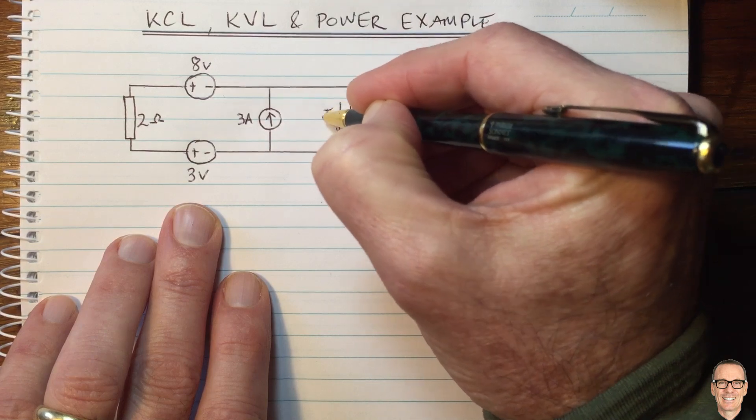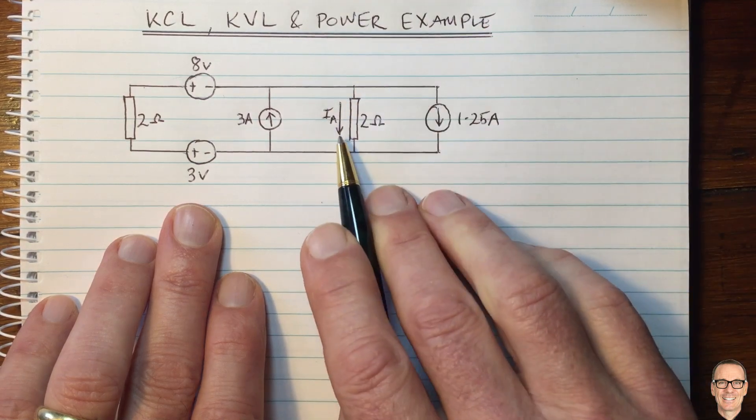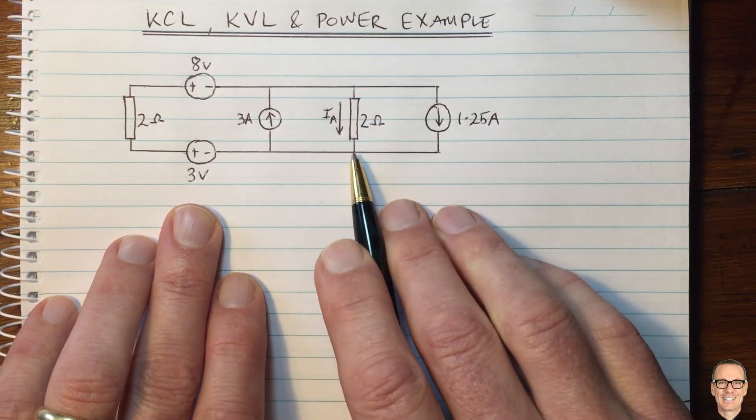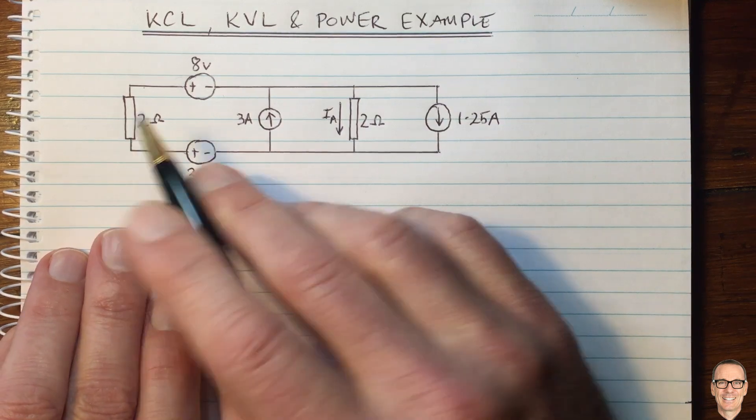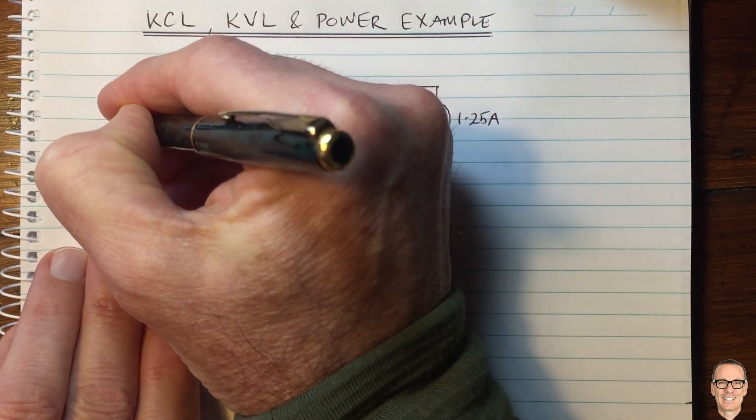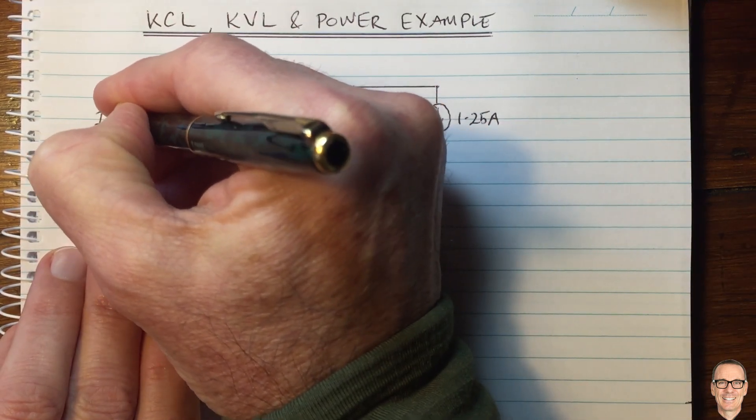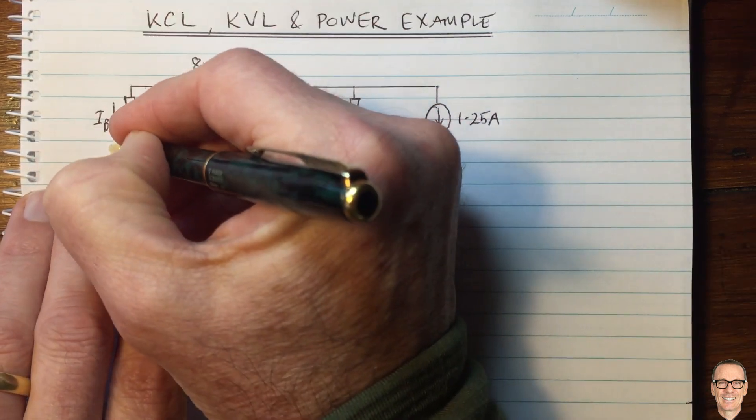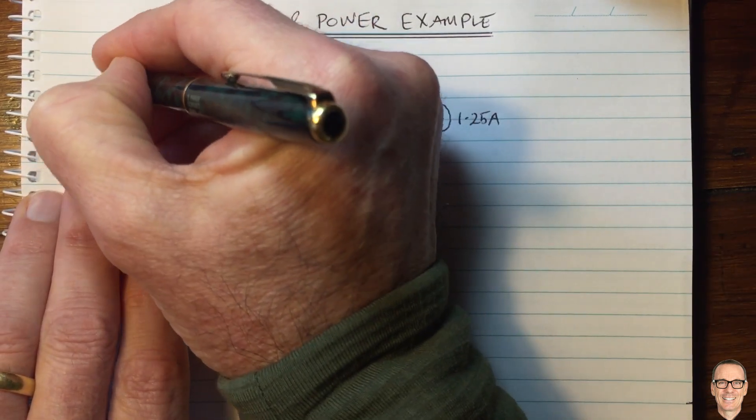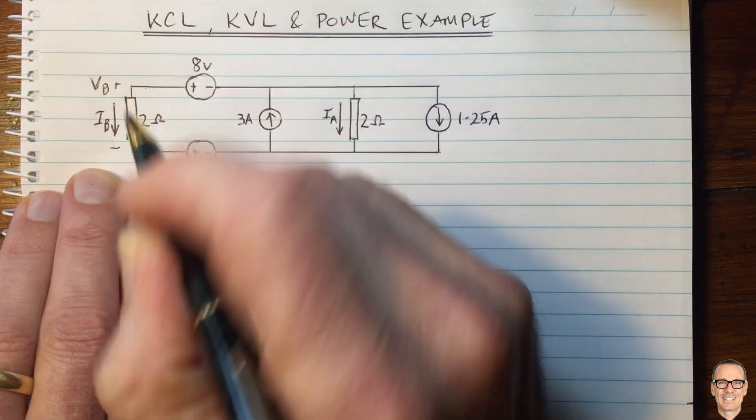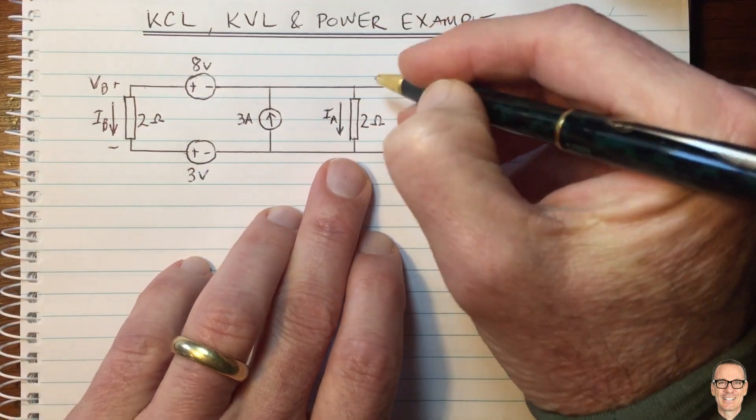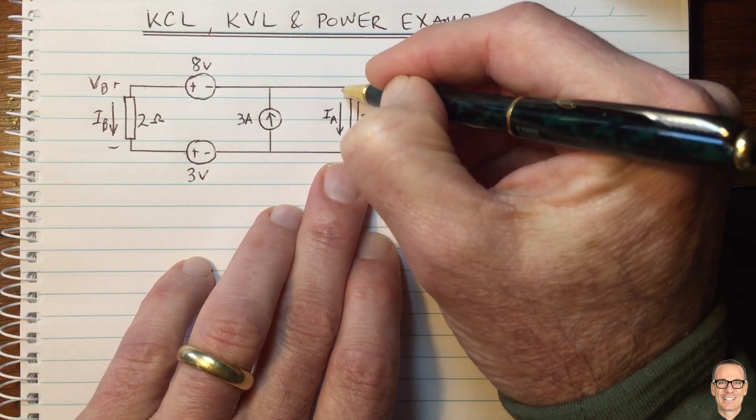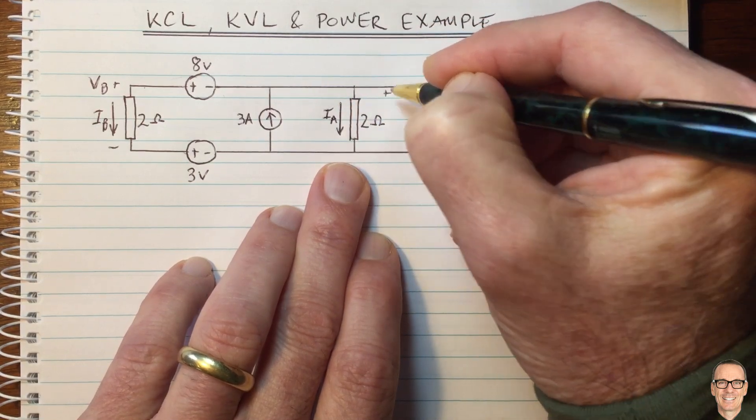We start here by defining a couple of currents that are going to help us in our analysis. Let me define this to be IA around here. We're going to consider the current going through this resistor and the current going through this resistor. I'm going to call that IB, and I give both of them a polarity. This one we're going to define as being VB. This is across here. And we're going to define this as being plus and minus VA across here.